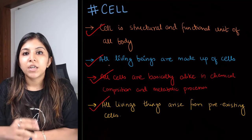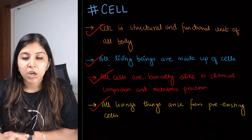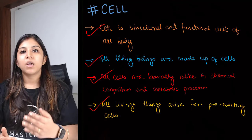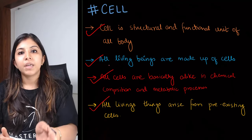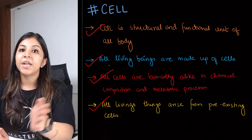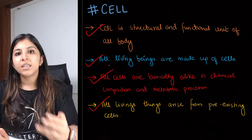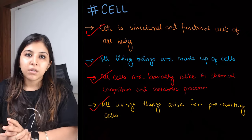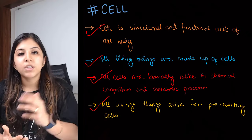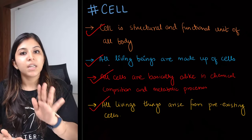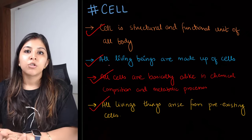Now the third scientist was Virchow. He stated that all living beings are made from pre-existing cells. So on the basis of what these three scientists said, cell theory was formed.